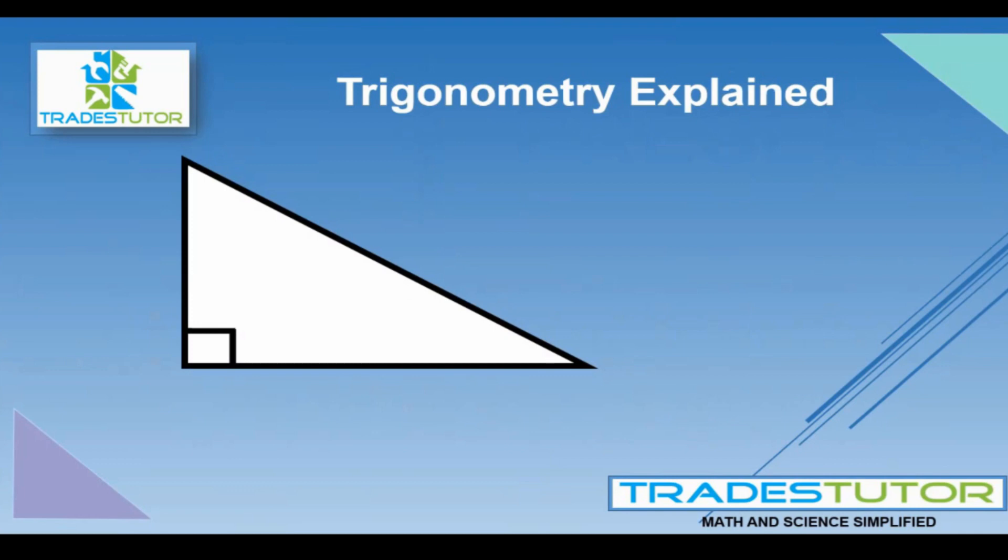Alright, so the first thing we're dealing with is a triangle. And specifically, a right triangle, which means that one of the angles is 90 degrees. The other two angles are going to end up adding to 90 degrees. But in all cases, we're dealing with this scenario right here. So that's our first start.